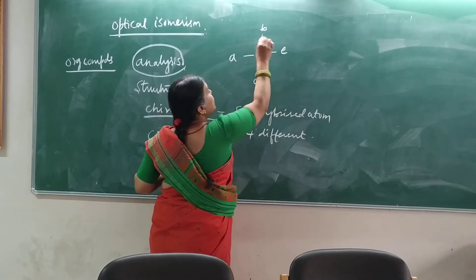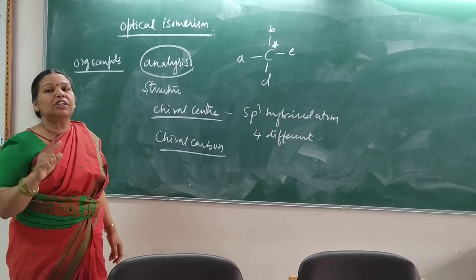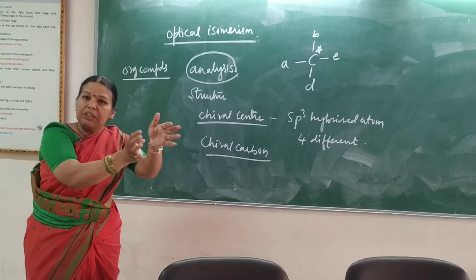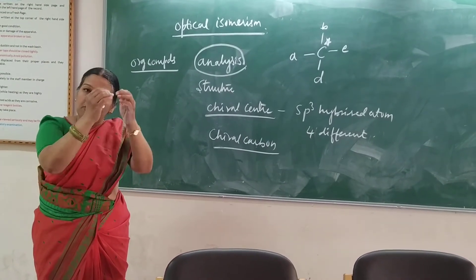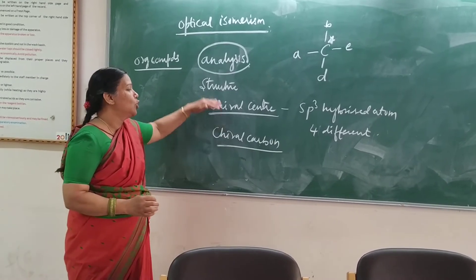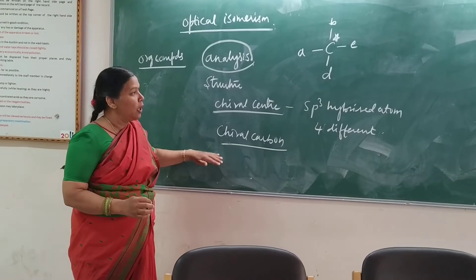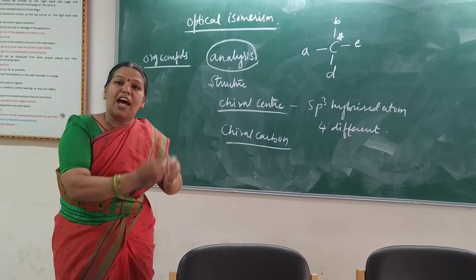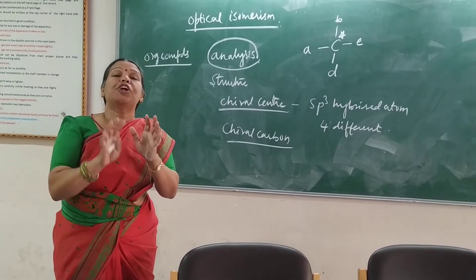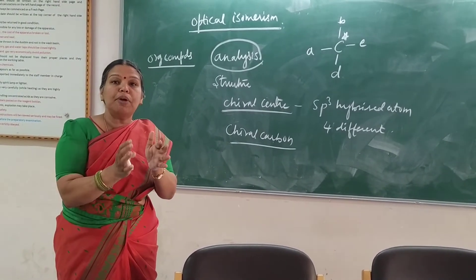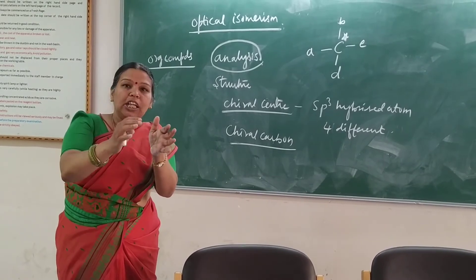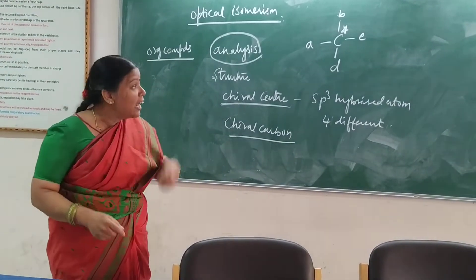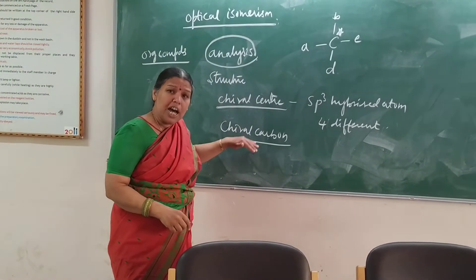If you identify the special variable carbon, you can differentiate and classify organic compounds: one is being optically active and one is being optically inactive. We can look at the structure — all these compounds have chiral carbon, so there is a confirmatory structure.